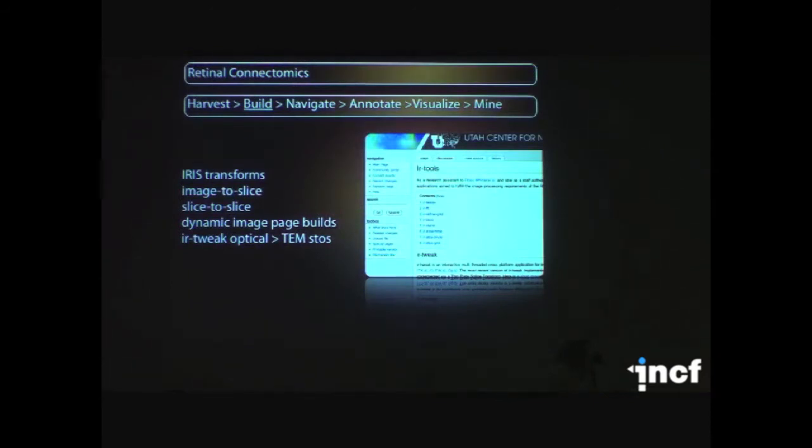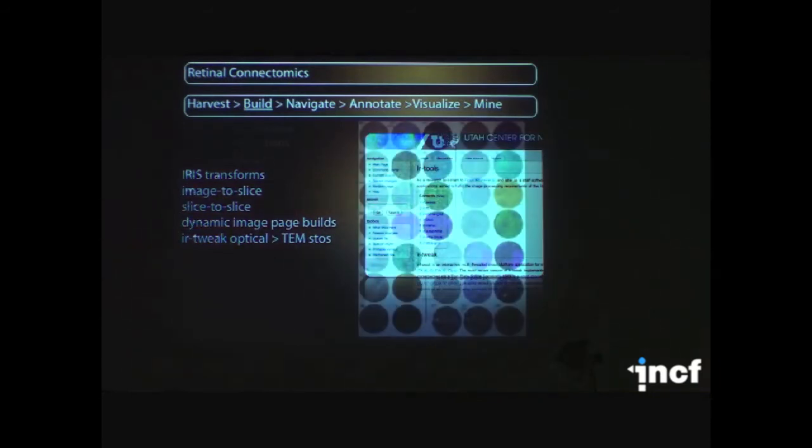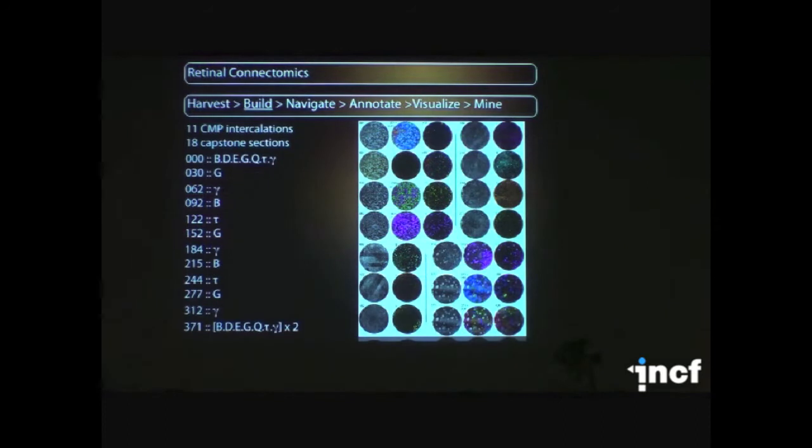I won't go into the details of that because I really want to get to what is probably the serious problem, and that is annotation and mining. We end up with a volume that is comprised of some 370 slices each of about a thousand images each, and the color sections here indicate slices in the volume where we have added molecular information that's of particular interest to us.